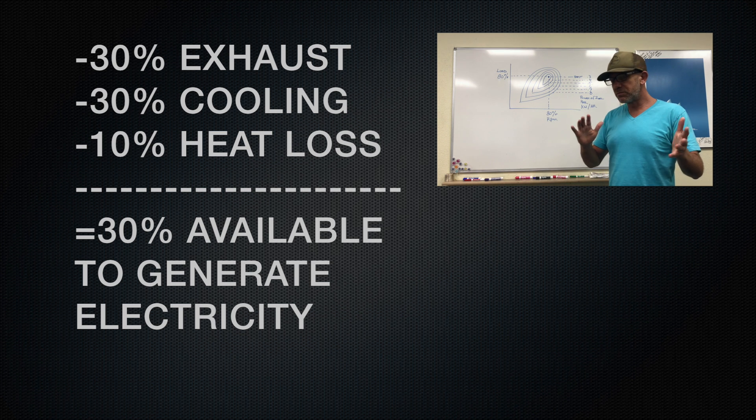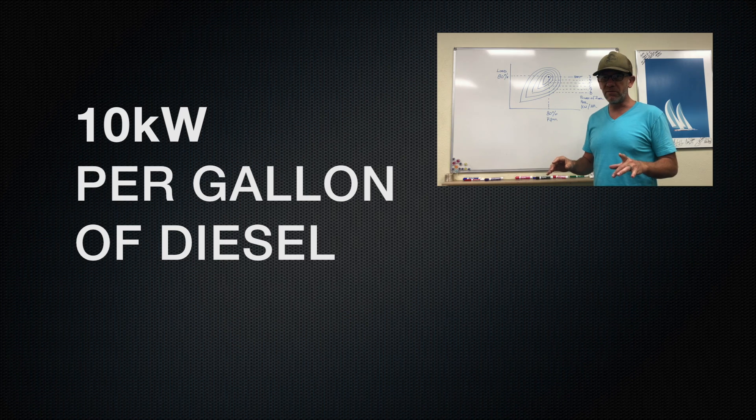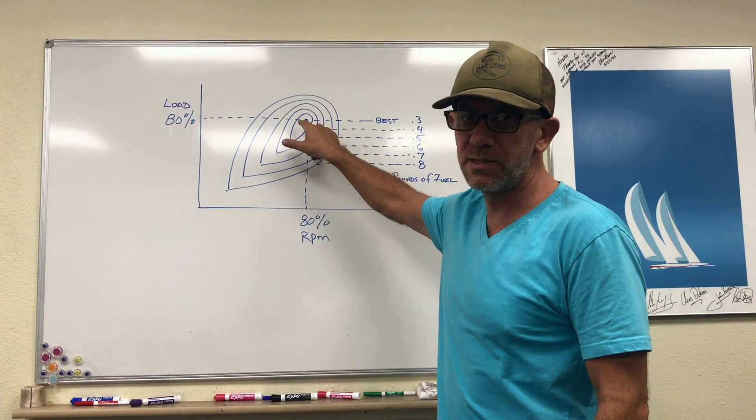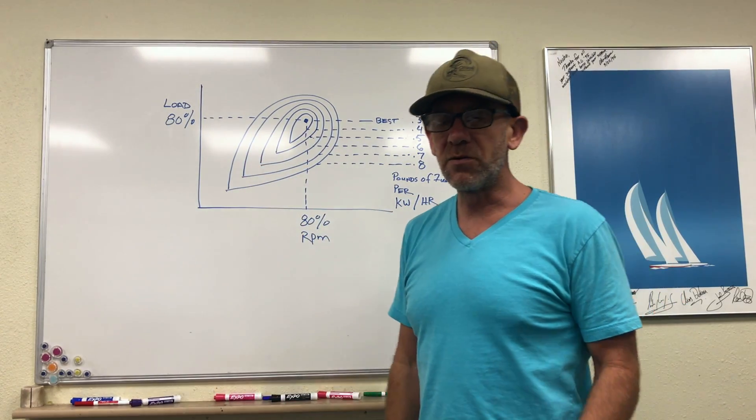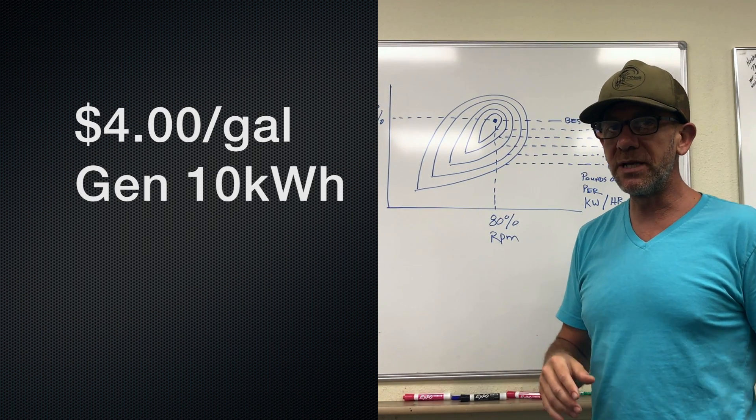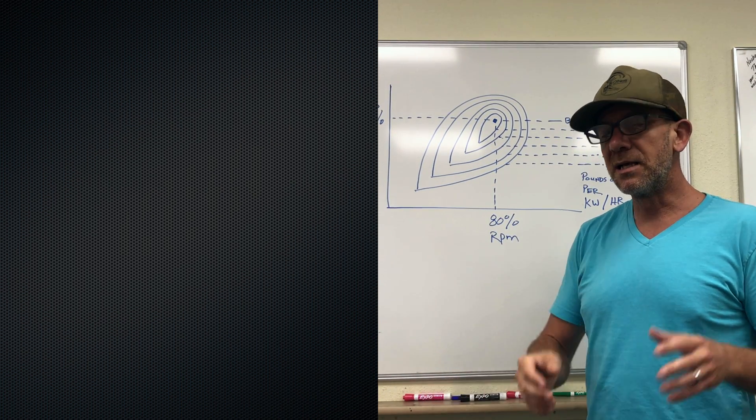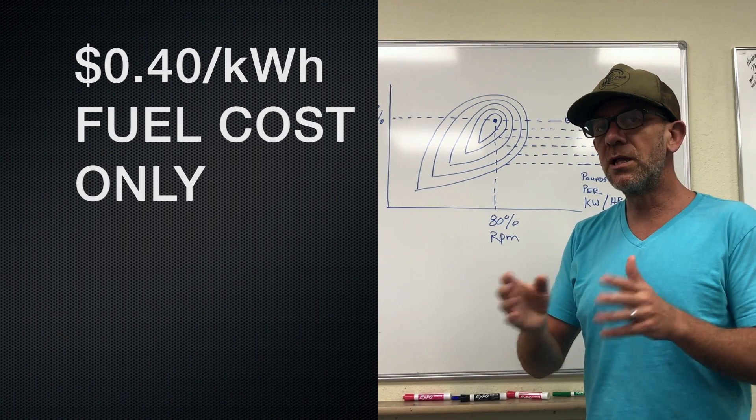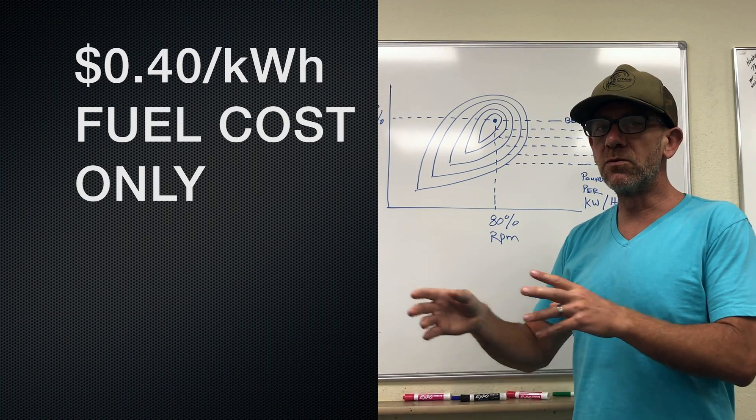Let's just say, to keep numbers round, that ends up being about 10 kilowatts of power that you have available. And that's what you're generating if you are running right at this sweet spot. So if you're buying the fuel for four dollars a gallon and you're able to generate 10 kilowatts of power, that's 40 cents per kilowatt just in fuel cost.